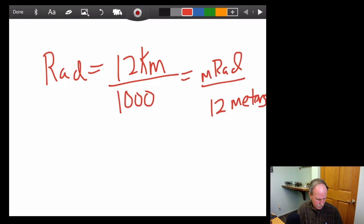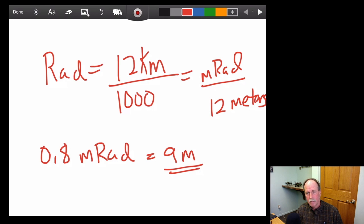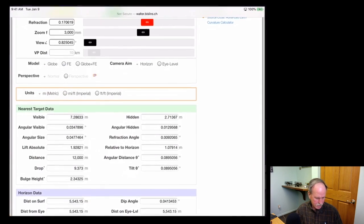So, let's take our radian and divide that by 1,000. And that will give us a millirad. And that millirad will be 12 meters. Everybody with me so far?